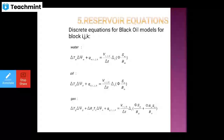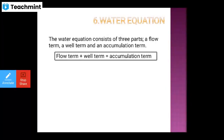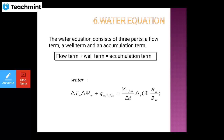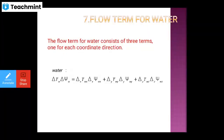So this is your reservoir equations. The water equation will consist of three parts: the flow term, the well term, and the accumulation term. We are writing the water equation as: delta-T_w plus delta-phi_w plus Q for water at IJK coordinates equals V divided by delta-T, multiplied by delta(S_w / B_w · phi). The flow term for water consists of three terms, one for each coordinate direction — x, y, and z.